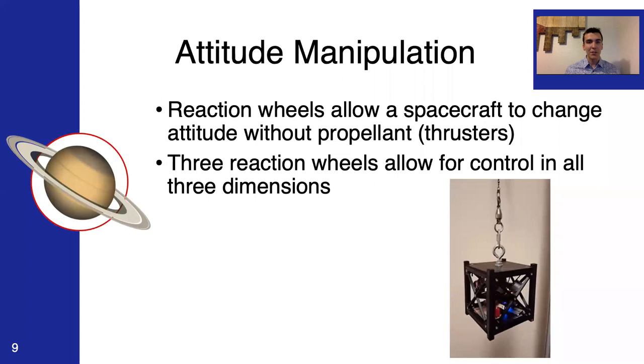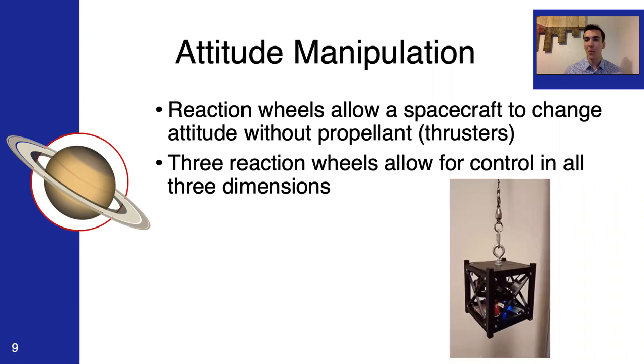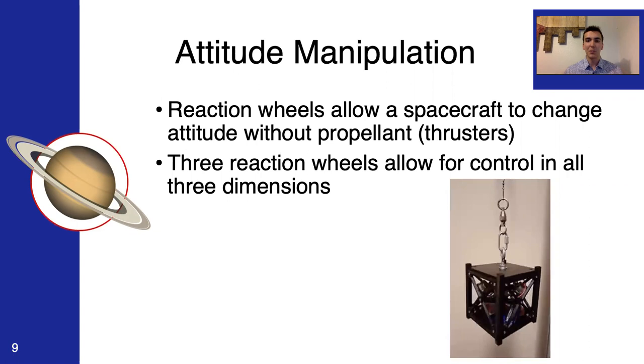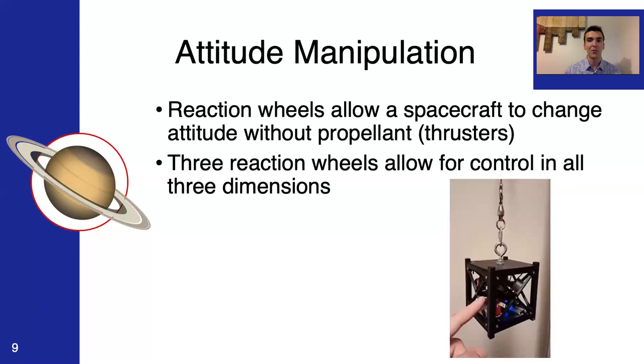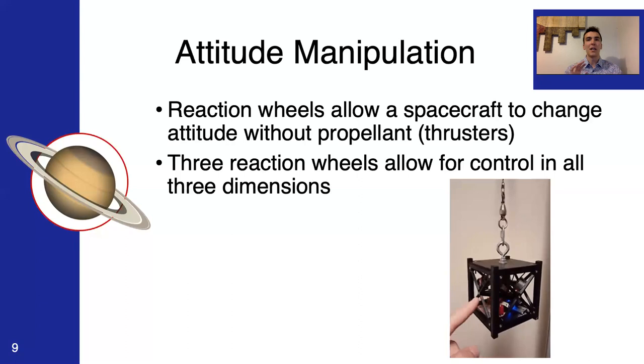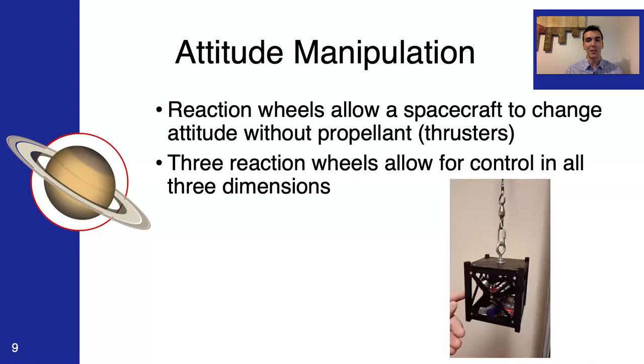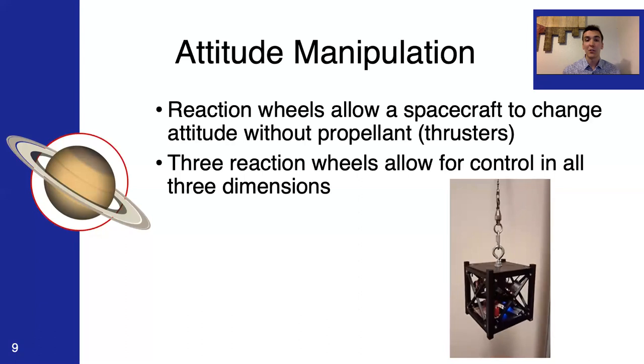One thing that is important to understand is attitude manipulation through the use of reaction wheels. Reaction wheels allow a spacecraft to change attitude without any thrusters. So, this all comes down to the conservation of momentum, or in this case angular momentum. If any one of these wheels spins really fast, then the spacecraft will slowly start to spin the opposite direction about the same axis in order to counteract that and preserve the energy on board the spacecraft. So, if you look at this GIF here, this is kind of a mock-up of a satellite in space, freely rotating about this chain. And only when the reaction wheels engage do you see that the attitude of the spacecraft is completely controlled to any outside perturbations.